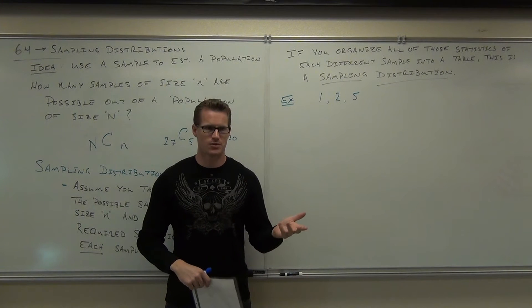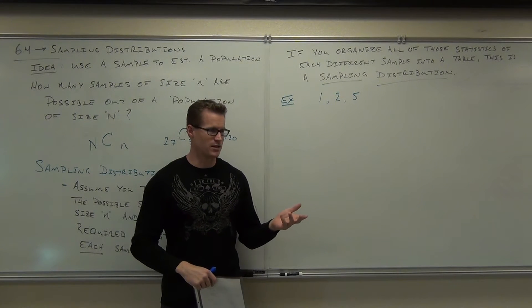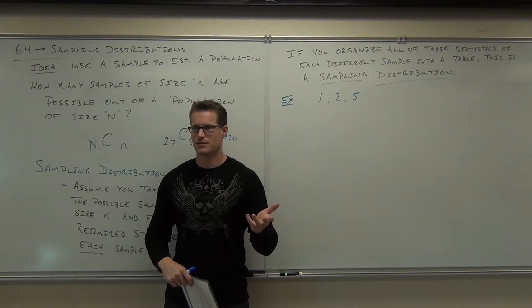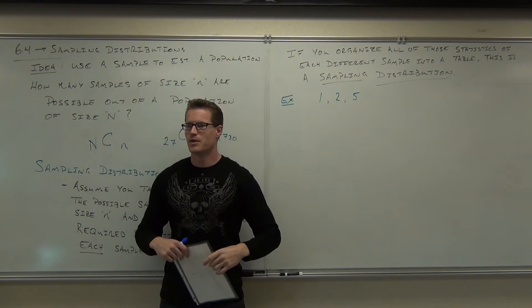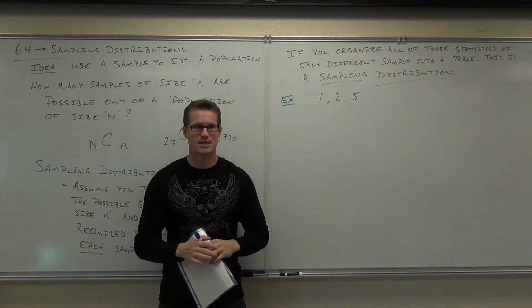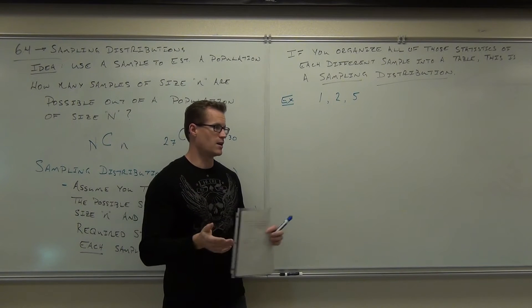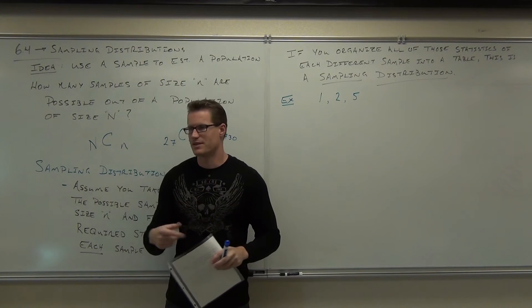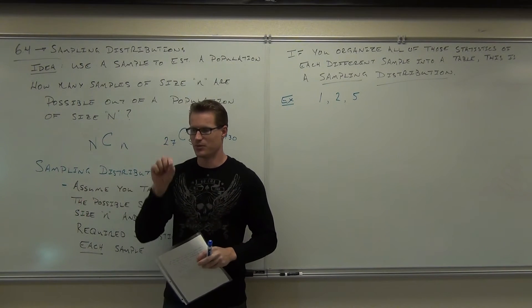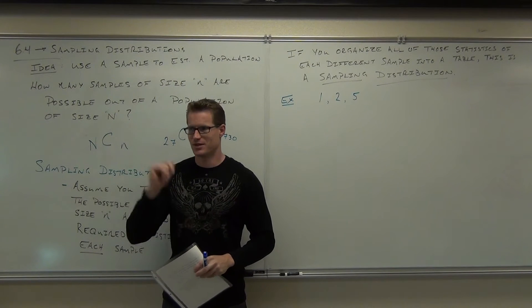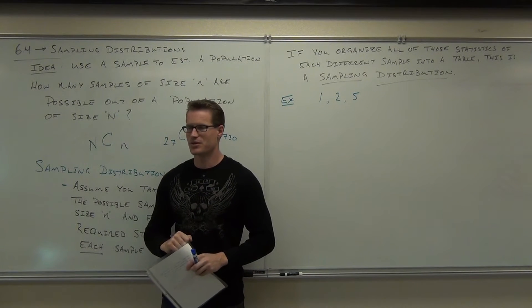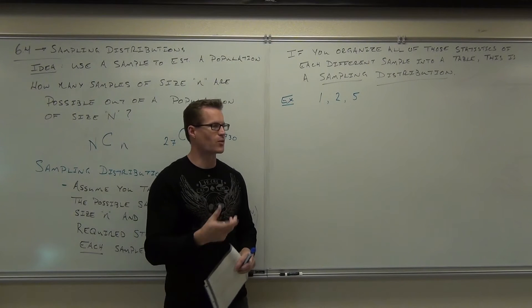It'd be like having a three-sided die, which is literally impossible, but let's pretend it is for this fact. Let's pretend you had a three-sided die. The only numbers on there would be one, two, and five. The only thing you can get out of it is one, two, and five.